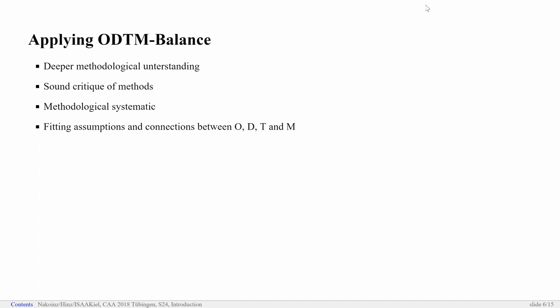Here, we have four things we have to do to integrate those pillars. We need a deeper methodological understanding, and this is why we have this session. We want to explore the different methods and approaches of classification. We need a founded critique of the methods. We need a methodological systematization, a systematic which tells us which approach is suitable for which research scenario. And finally, we need to think about the connection between the four different pillars.